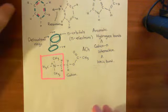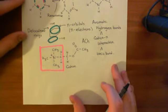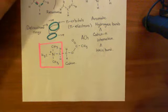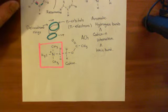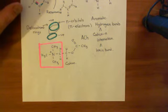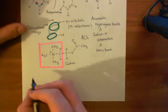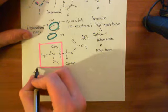So we've discussed tryptophan. Now let me discuss two other amino acids which can be in this cavity between the two protein subunits of the nicotinic acetylcholine receptor. The next one we'll discuss is tyrosine.